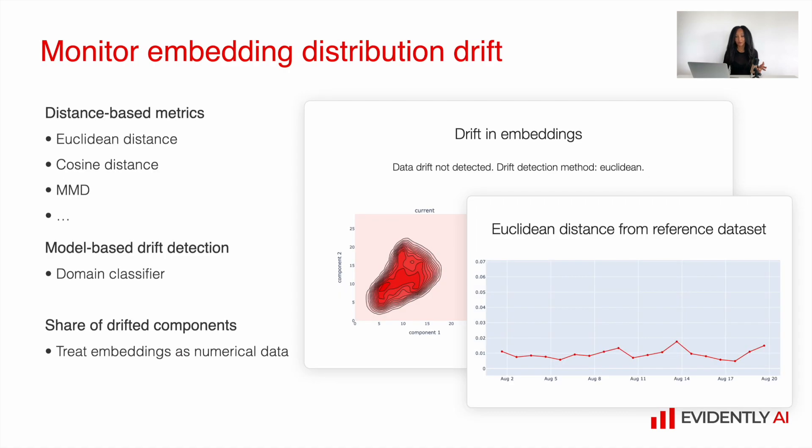And in this case how can we perform monitoring. When we have embeddings we are quite lucky because they're numerical values. They're vectors in high dimensional space. So we can calculate quite a lot of distance-based metrics for those vectors. For example, we can calculate Euclidean distance, cosine distance, MMD and many other distance-based metrics. We can perform model-based drift detection and assess the share of drifted components.